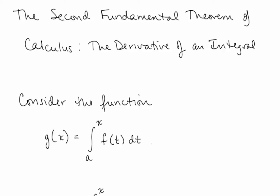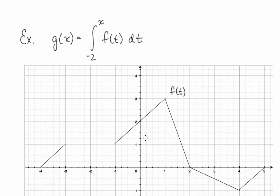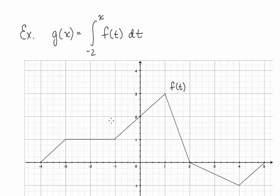Before we get into the Second Fundamental Theorem, let's consider the function g(x) defined to be the definite integral from a to x of f(t) dt. So for example, here we have g(x) equal to the definite integral from negative 2 to x of f(t) dt, where f(t) is given. For any x value, we are taking the integral from negative 2 to that x value of f(t).